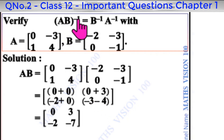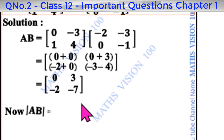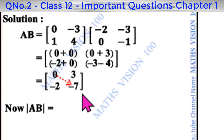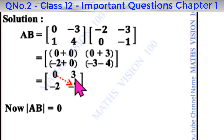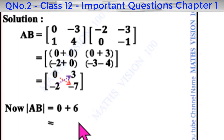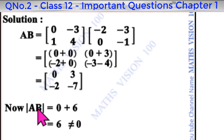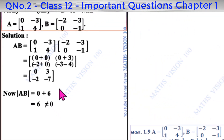Now for AB inverse, we first find the determinant of AB. Determinant of AB equals first principal diagonal: 0 into minus 7 is 0, minus the other diagonal: minus 2 into 3 is minus 6, so determinant equals 6, which is not equal to 0. Therefore AB is non-singular and AB inverse exists.